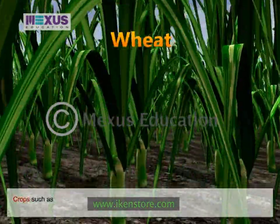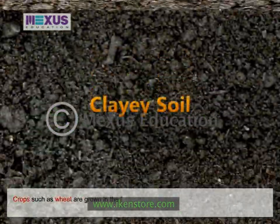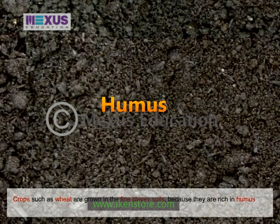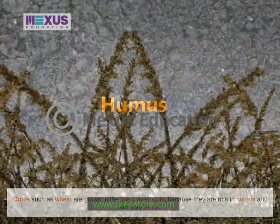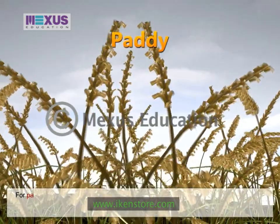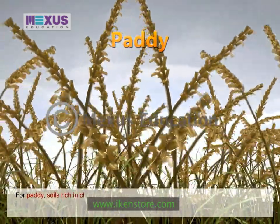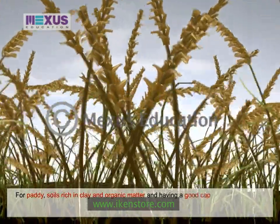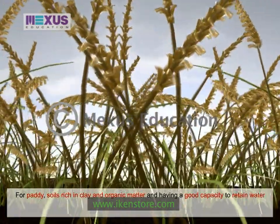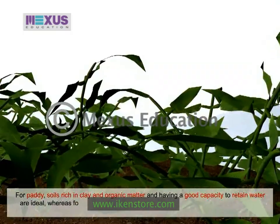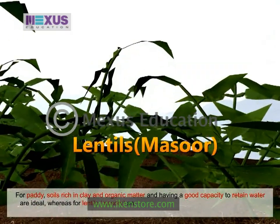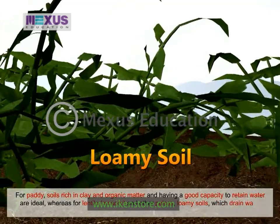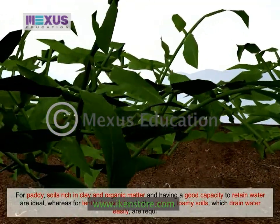Crops such as wheat are grown in fine clayey soils because they are rich in humus and are very fertile. For paddy, soils rich in clay and organic matter and having a good capacity to retain water are ideal. For lentils or masoor and other pulses, loamy soils which drain water easily are required.